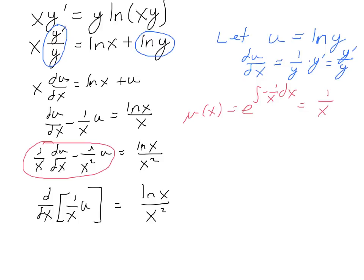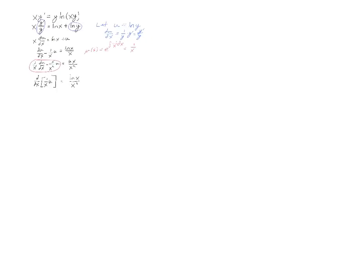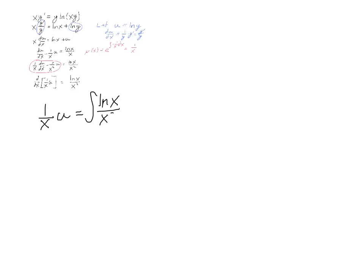Now all I have to do is integrate. We've reduced the whole problem down to 1 over x times u equals the integral of the natural log of x divided by x squared dx. Using integration by parts, we get negative 1 over x minus the natural log of x over x plus c.